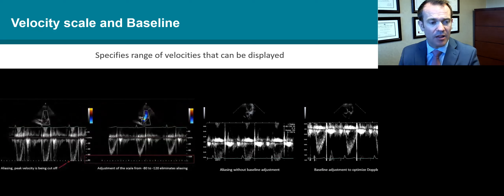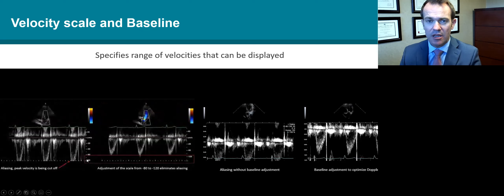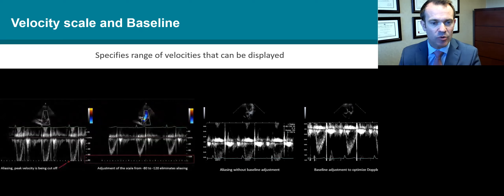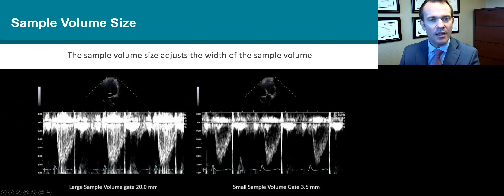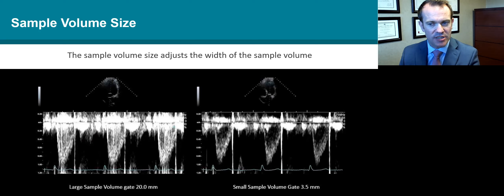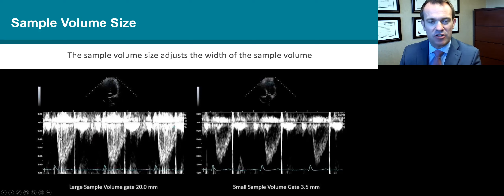Sometimes, the bottom of the velocity is cut off on the display. There are a couple of things we can do: one is to adjust the scale, which refers to the velocities that can be displayed. The other is to change the baseline by shifting it upwards. The sample volume refers to the two lines you see on your pulse wave Doppler — how wide or close they are. If they're very wide, we get spectral broadening, making it difficult to identify the true velocity. When we make the sample volumes smaller, we can see the modal velocity, a clearer peak velocity.